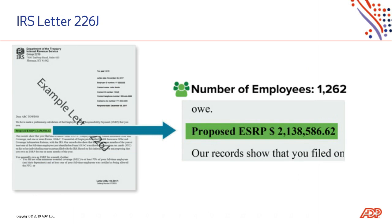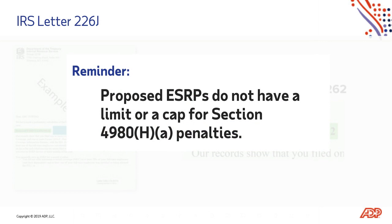Now that you understand the building blocks of the ACA, this is an actual example of a penalty notice received by a client. As you can see on the letter, the organization has 1,262 full-time employees as estimated by the IRS, and it includes a very daunting ESRP — employer shared responsibility payment — amount of over $2 million. This illustrates how large of an impact a potential ACA penalty can have, and that a $2 million penalty for a business of 1,200 FTEs can be devastating. This is known as the big penalty, also known as IRS Code Section 4980HA, the penalty tied to the 95% MEC threshold. It is important to note that there is no cap or limit on these penalties.